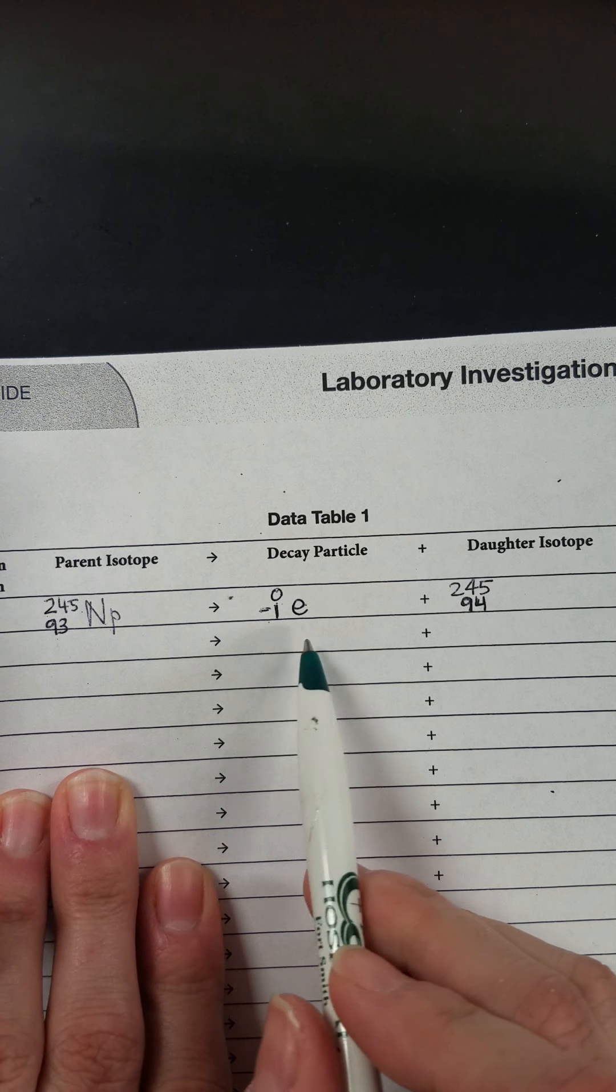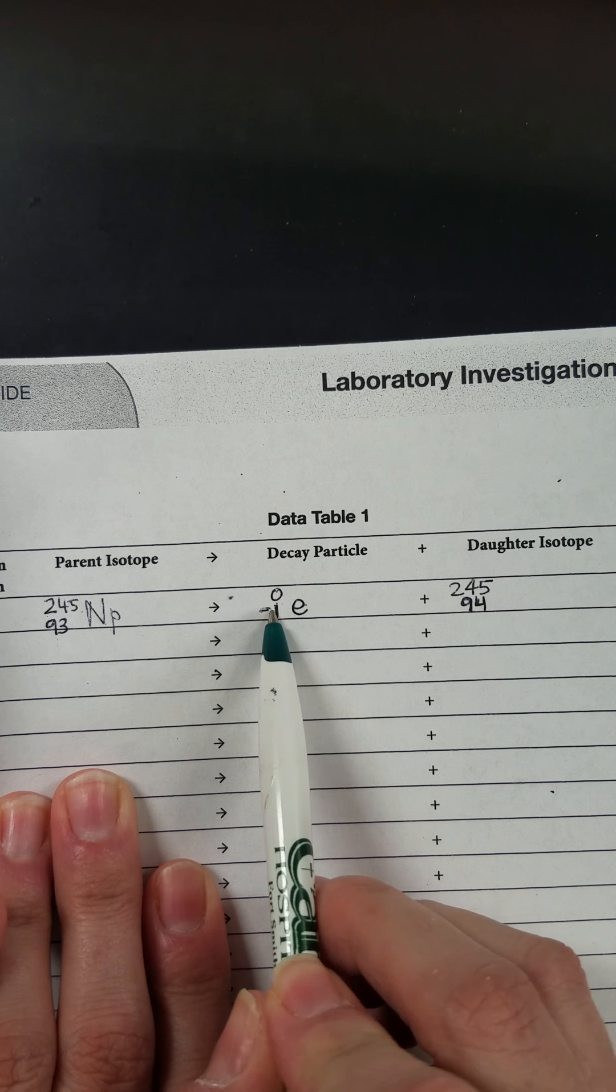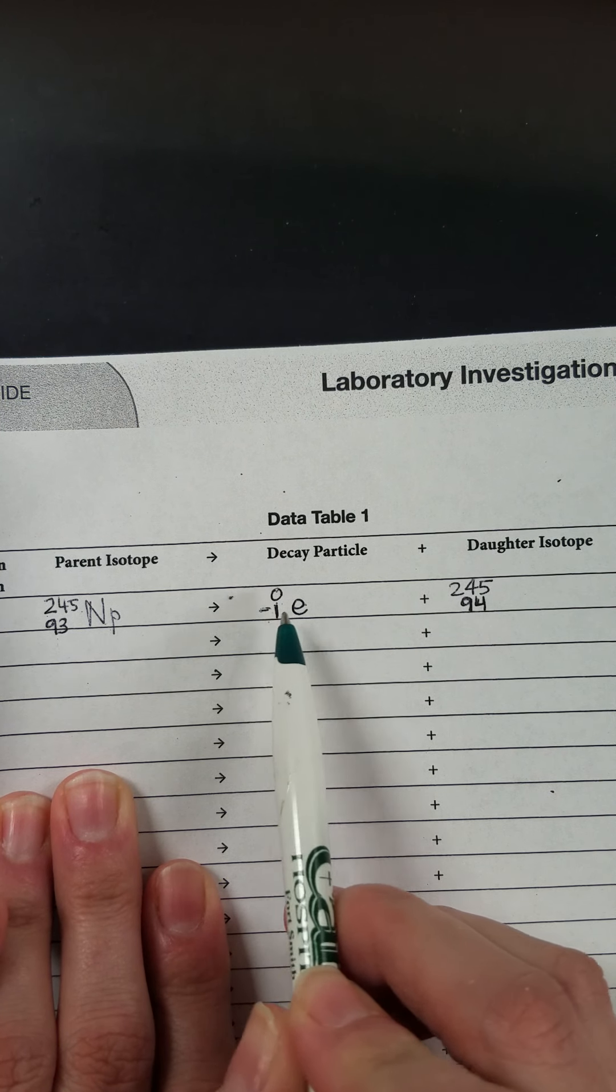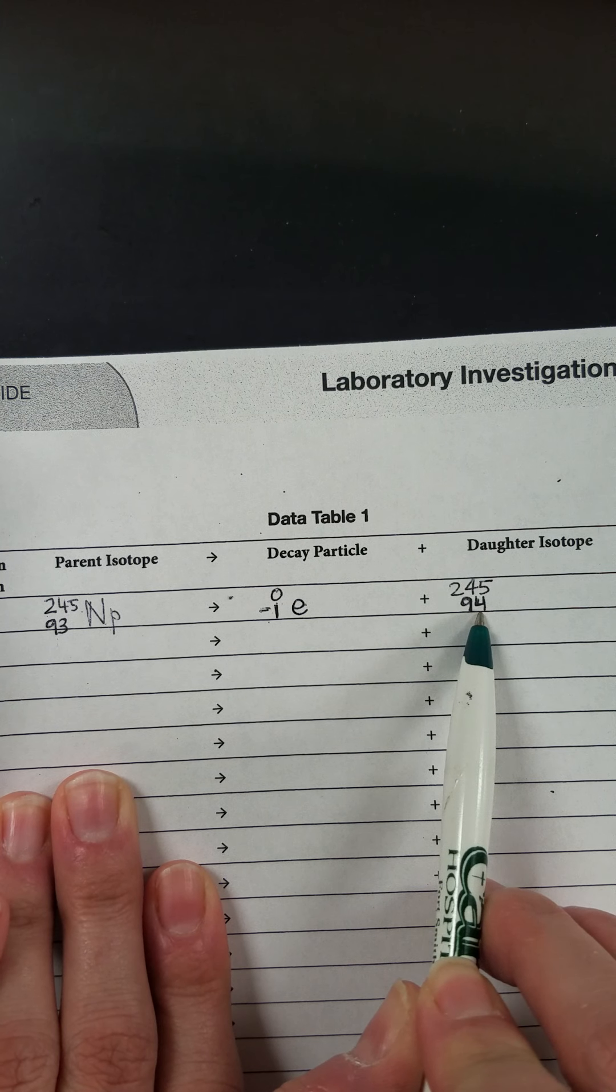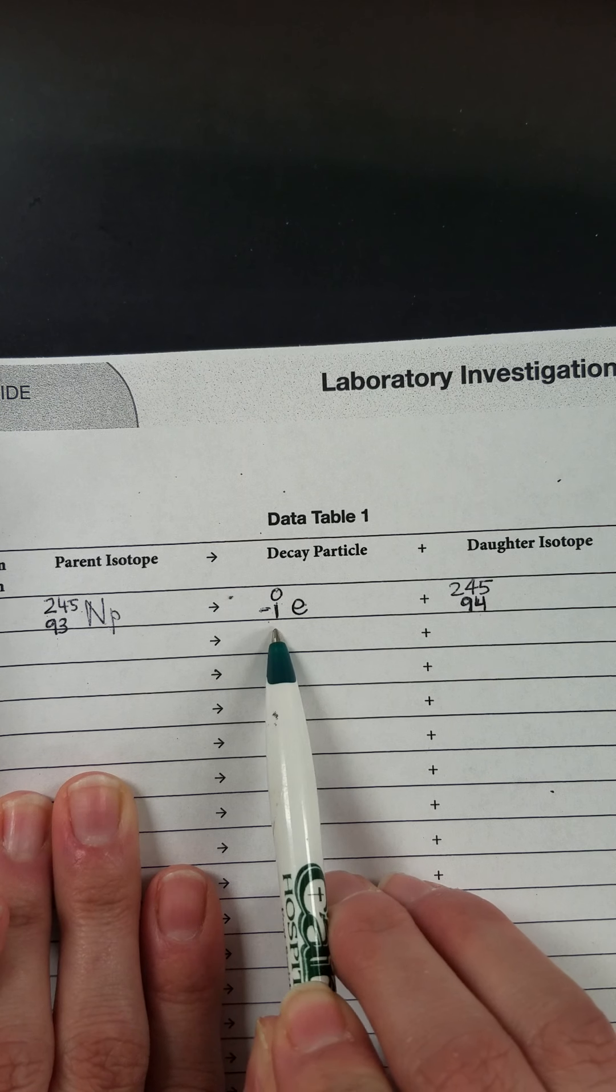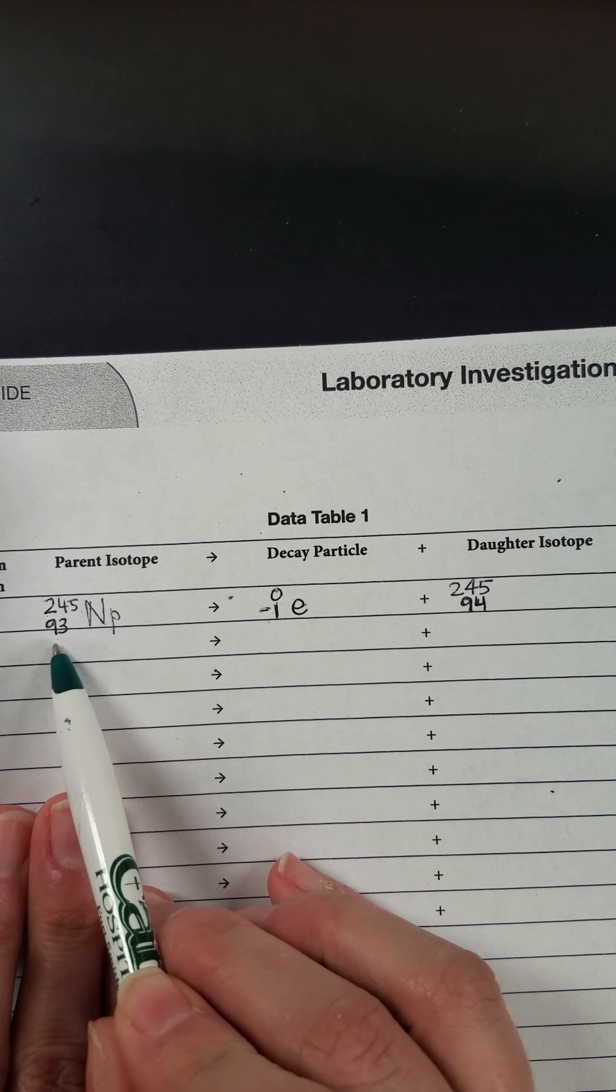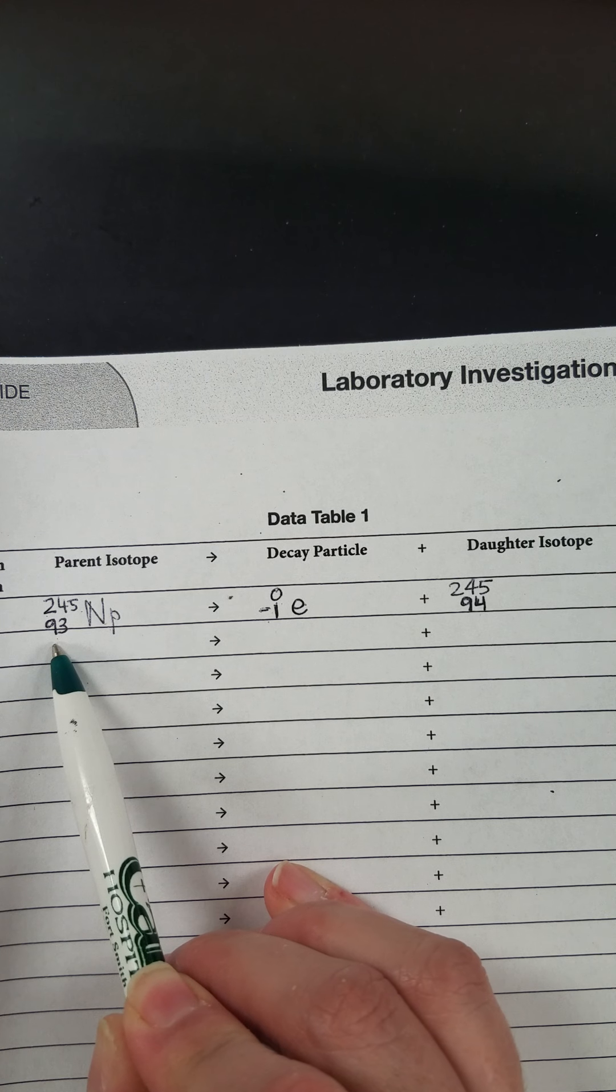And here's why it's 94 and not 92. This is a negative one on this side. So I'm going to subtract one from whatever my atomic number is for my daughter isotope. So 94 minus one gets me back to my 93 that I started with on the left side of the equation.